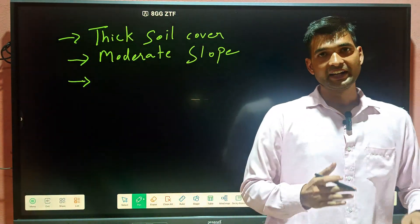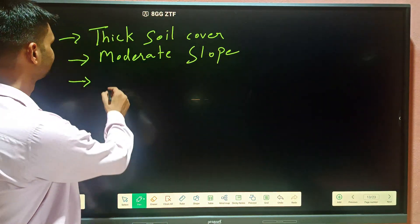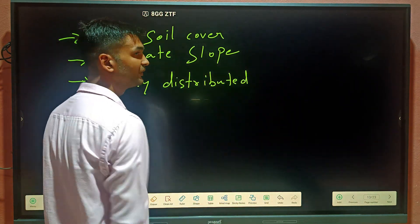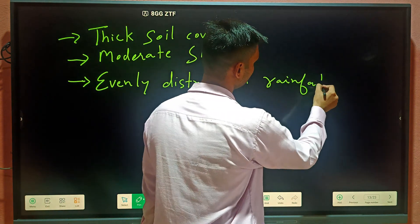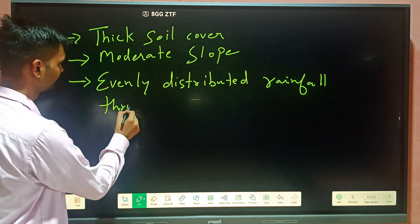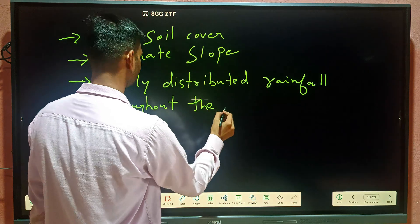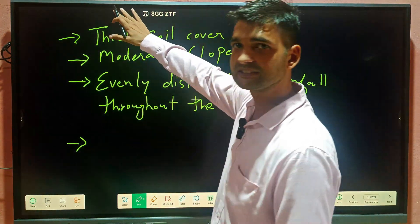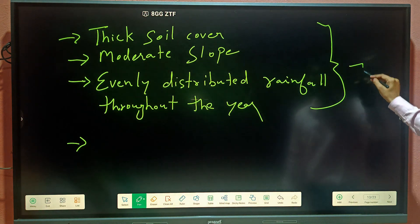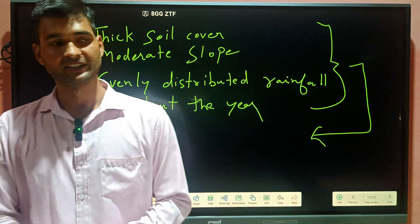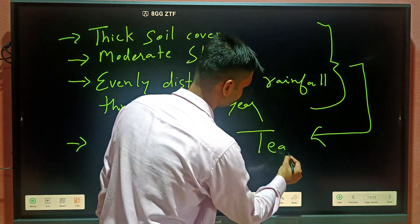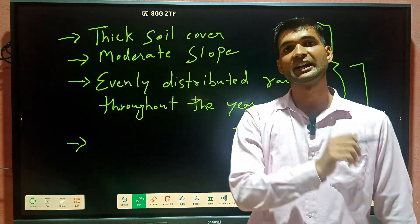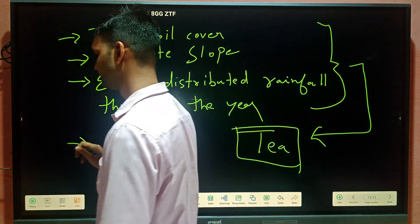One important feature is evenly distributed rainfall throughout the year. This region has thick soil cover, moderate slope, and evenly distributed rainfall — all three characteristics make this region suitable for growing tea. Darjeeling is part of Bengal.